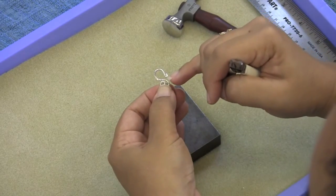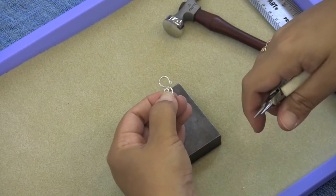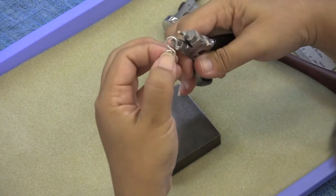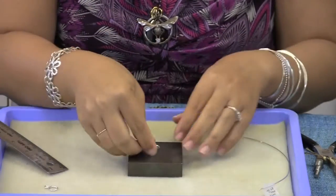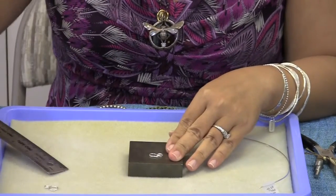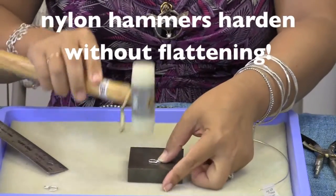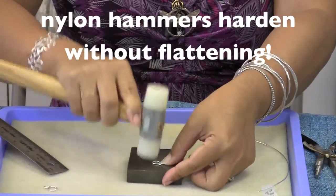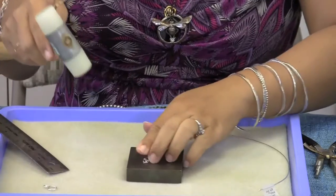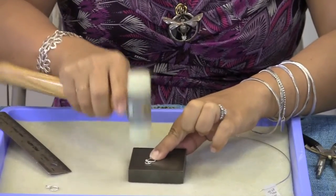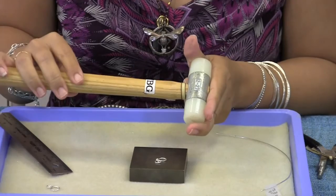You can also make this space at the end of the hook a little bit smaller so the fit will be tighter on the ring that you're going to use to close your clasp. And if you want to harden the wire even more without flattening it you can use your nylon hammer here to just hit the metal a lot of times to make it nice and strong. The nylon hammer will harden your wire without flattening the metal which is what I want in this case.